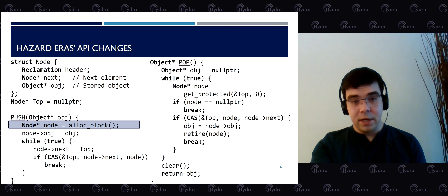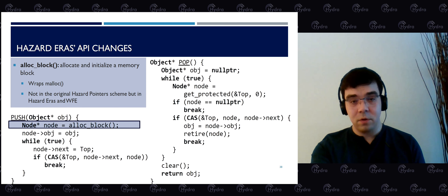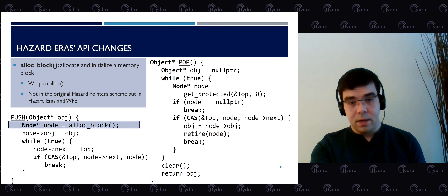It turns out that Hazard Eras, unlike hazard pointers, can be modified to guarantee wait-freedom. This is exactly what our recent Wait-Free Eras paper in PPoPP 2020 does — it is based on Hazard Eras but also provides strong wait-freedom guarantees. In the Hazard Eras API, we replace malloc with alloc-block in push, which allocates and initializes the memory block and stores the allocation epoch inside the reclamation header.